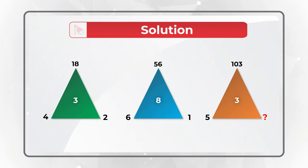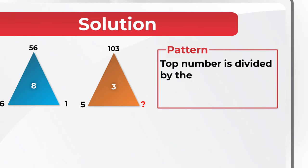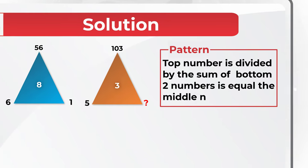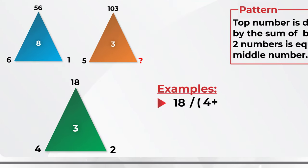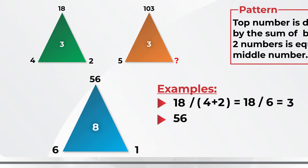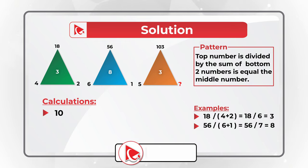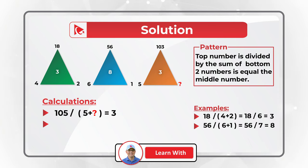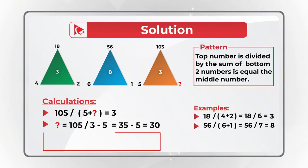One phrase you hear on this channel the most is: always look for patterns. The pattern here is that the top number divided by the sum of the bottom two numbers on the outside of the triangle equals the middle number inside the triangle. In the first triangle: 18 divided by (4 plus 2) equals 18 divided by 6, which equals 3. In the second triangle: 56 divided by (6 plus 1) equals 56 divided by 7, which equals 8. So to calculate the missing number, we build an equation: 105 divided by (5 plus missing number) equals 3. We divide 105 by 3 and subtract 5: 35 minus 5 equals 30. The answer is Choice D, 30.